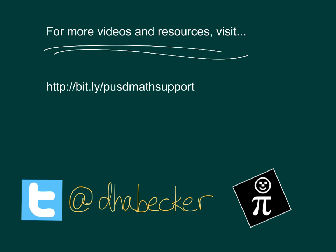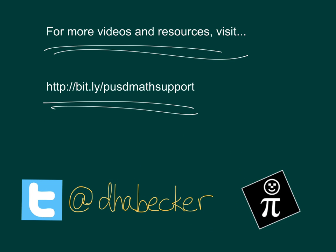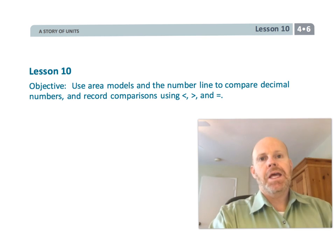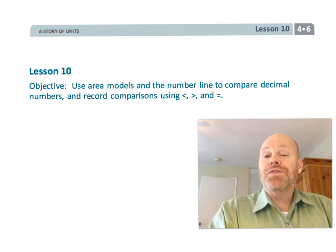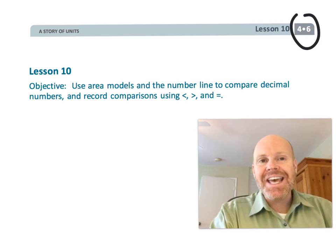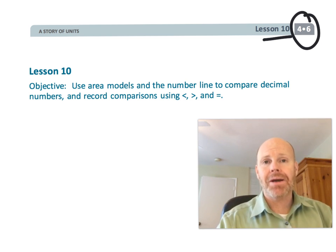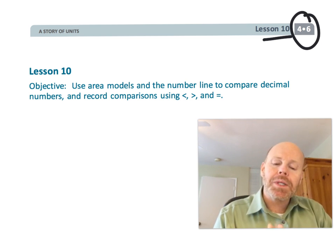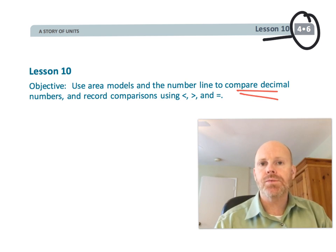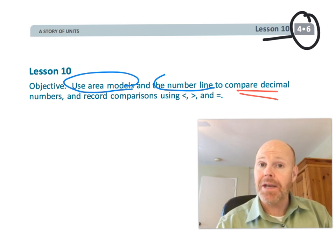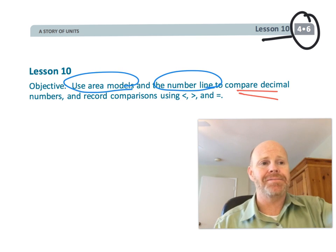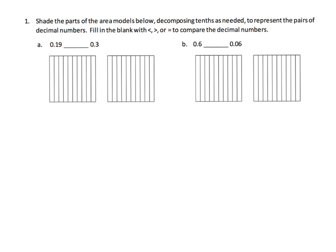This is fourth grade module 6 lesson 10. In this lesson we're going to continue comparing decimals, but this time we're really going to focus on two models: the area model and the number line. So let's get started.